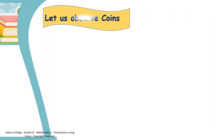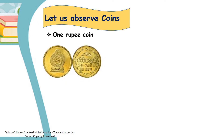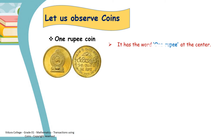Let us observe coins. Are you ready? Ok. This is one rupee coin. Children, look at this coin. It has the word one rupee at the center.